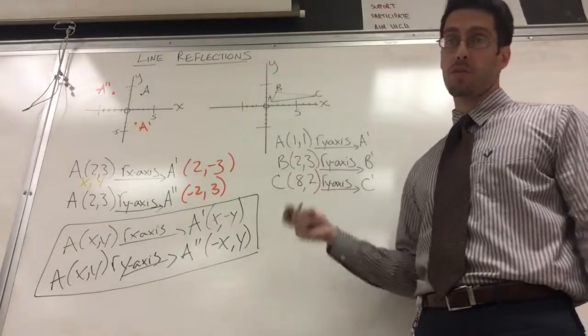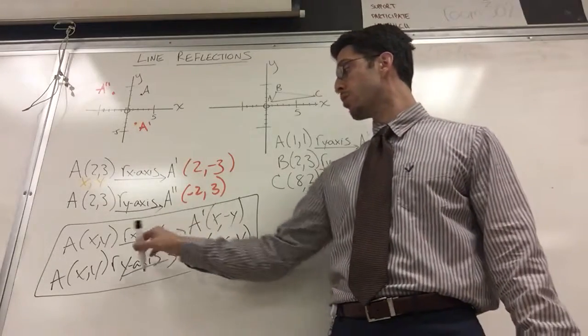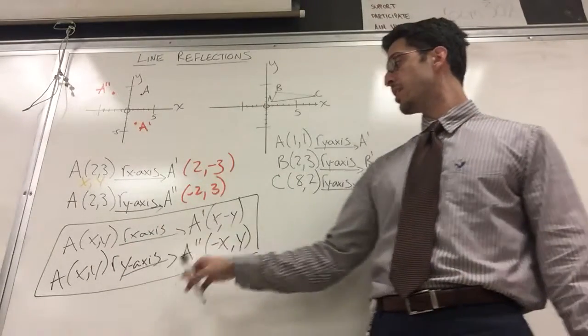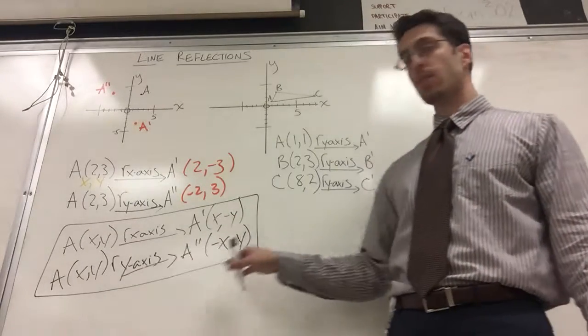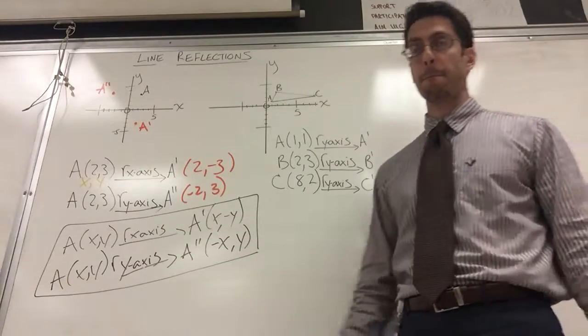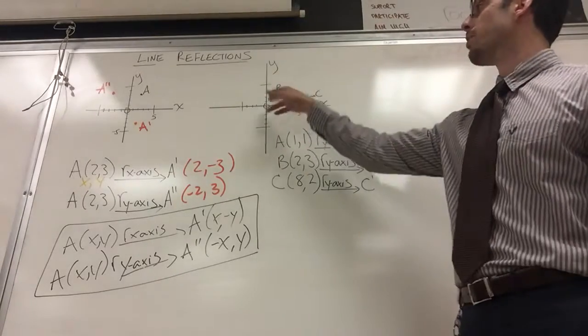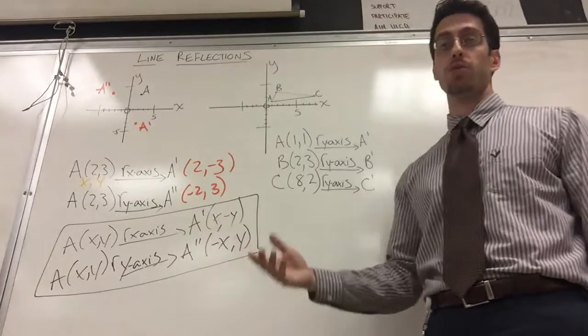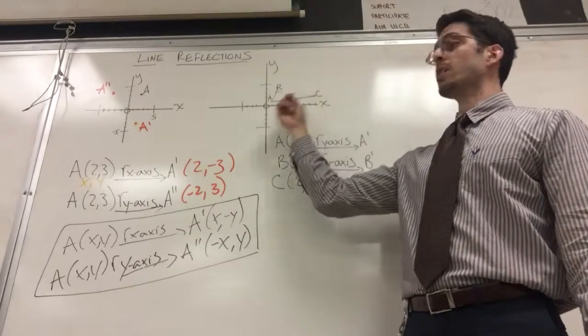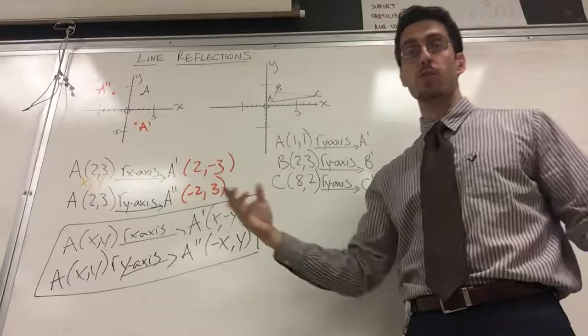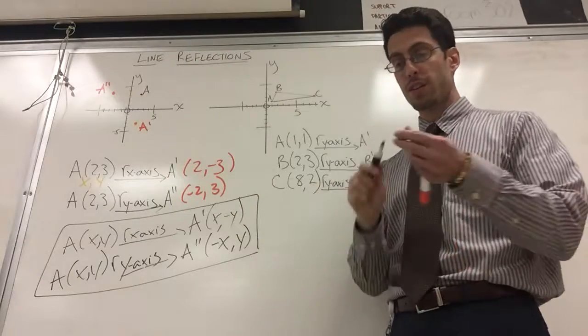I'm going to do an example just for fun. We're trying to remember these rules. If I'm reflecting in the x-axis, the x stays the same. If I'm reflecting in the y-axis, the y stays the same. Now here's an example of a triangle because in geometry you do more shapes than actual just points. But in order to do a shape, you got to understand that shape is made up of vertices which are points.